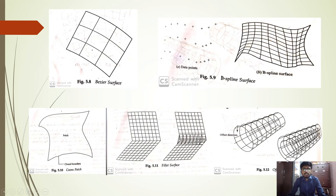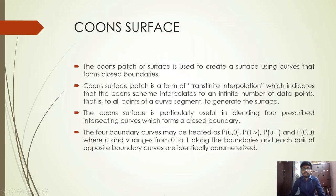An offset surface is a known surface which can be redimensioned to form a different surface object. For example, a cylinder can be offset in direction to form a hollow cylinder. This is an example of an offset surface. These are some of the synthetic surfaces.